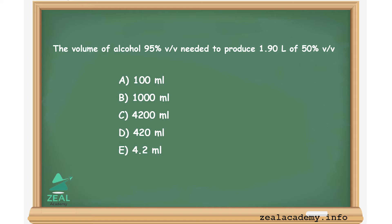In this question, the volume of alcohol at 95% volume by volume needed to produce 1.90 liters of 50% volume by volume is: option a) 100 ml, option b) 1000 ml, option c) 4200 ml, option d) 420 ml, option e) 4.2 ml.